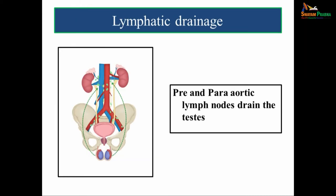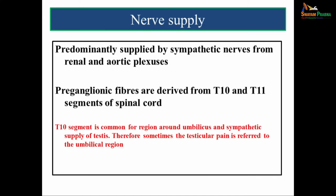The lymphatic drainage is predominantly by pre- and para-aortic lymph nodes. The nerve supply is predominantly by sympathetic nerves from the renal and aortic plexuses. Preganglionic fibers are derived from T10 and T11 segments of the spinal cord. The T10 segment is common for the region around the umbilicus and the sympathetic supply of the testes; therefore, testicular pain is sometimes referred to the umbilical region.